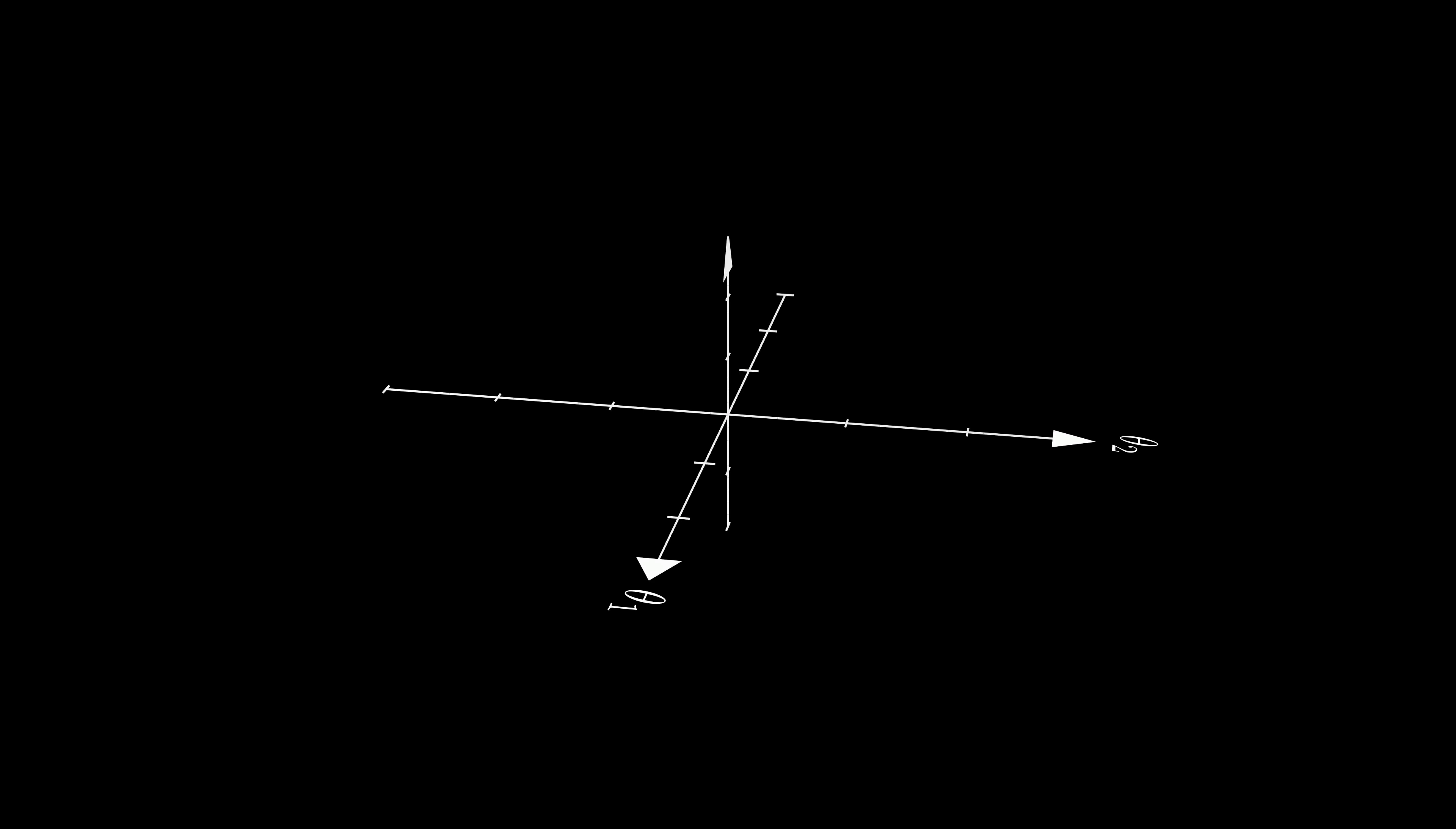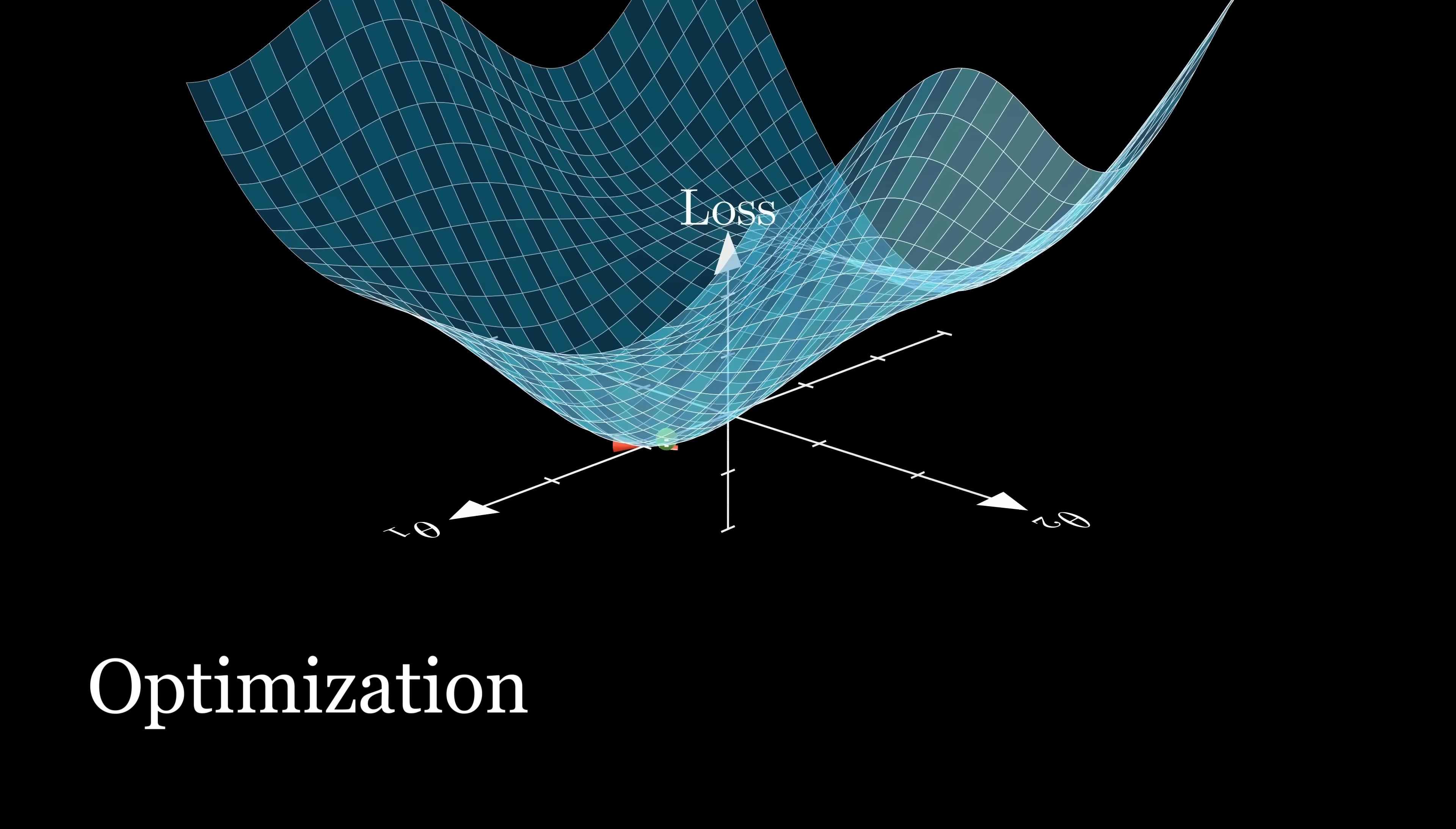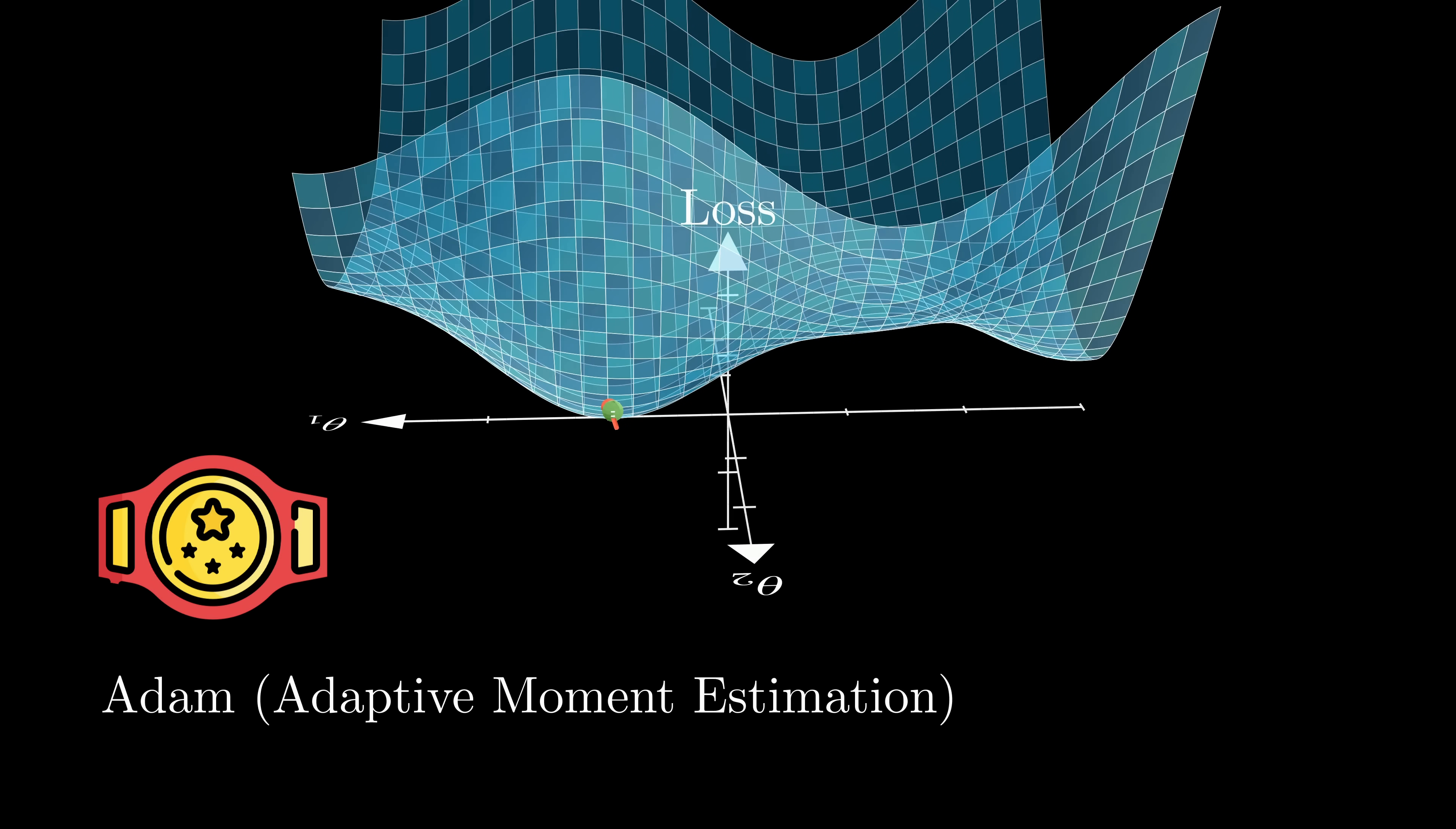This video is about how to find good parameters for a machine learning model. The search for good parameters is known as optimization, and the tool we use is known as an optimizer. For a long time, the Adam Optimizer has been the default choice. But now, there is a new exciting challenger, the Muon Optimizer.